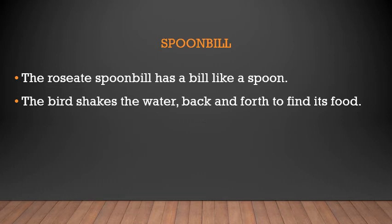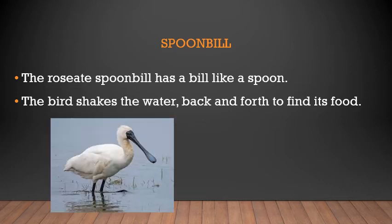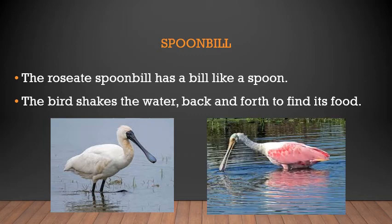Next is the spoonbill. The roseate spoonbill has a bill shaped like a spoon. The bird shakes the water back and forth so that only insects or worms remain in its beak. This is how the roseate spoonbill finds its food.